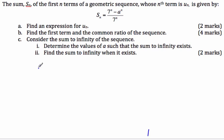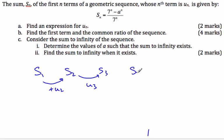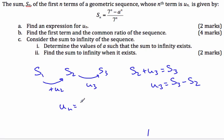If I have S_1 and want to get to S_2, I have to add U_2. Similarly, to get to S_3, I add U_3. So, for example, S_2 plus U_3 equals S_3, meaning U_3 equals S_3 minus S_2. Generalizing that idea, U_n equals S_n minus S_(n-1).